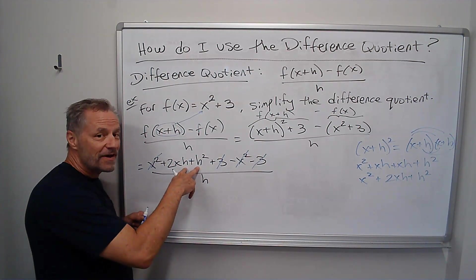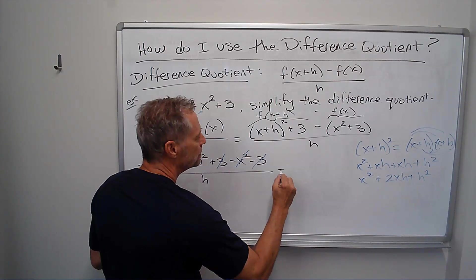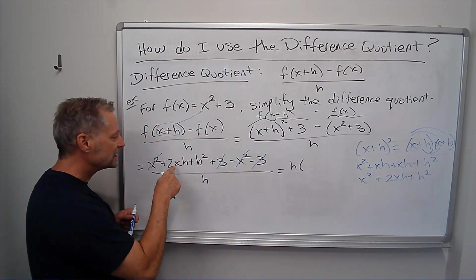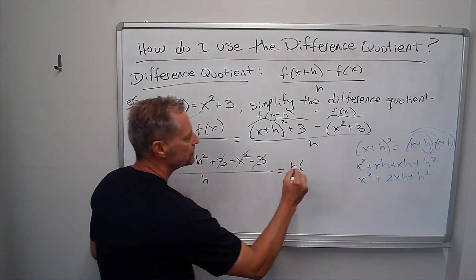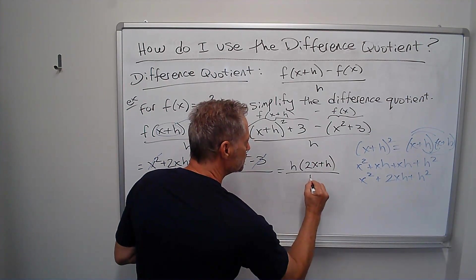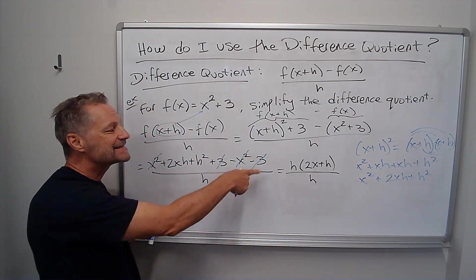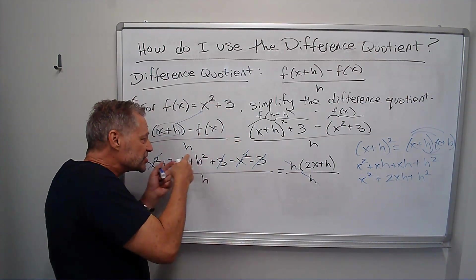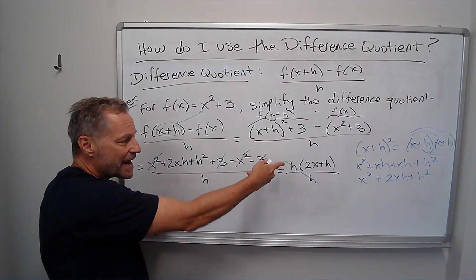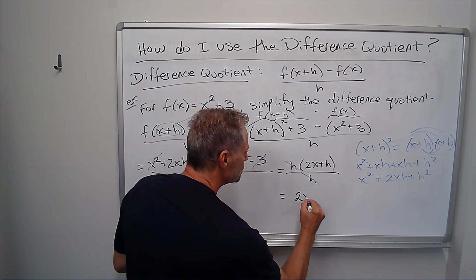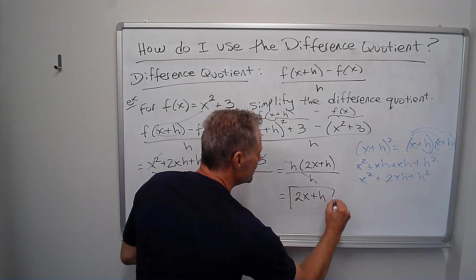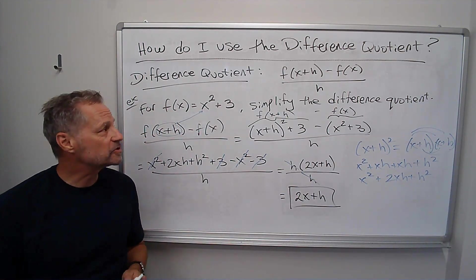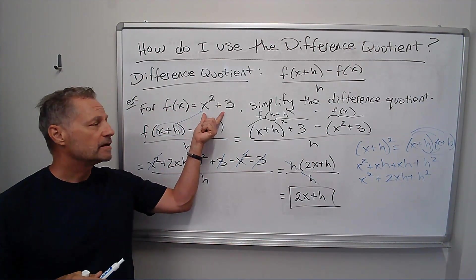But what I'm going to do is I'm going to factor out one of these h's. And it leaves me 2x plus h. Still divided by h. The reason I do that is because now these h's will cancel. That's why we always have to have one of the h's in each term. And so my answer is just 2x plus h. That's the simplified difference quotient for x squared plus 3.